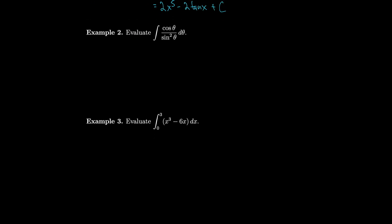Let's evaluate the indefinite integral of cosine theta over sine squared theta, d-theta. To do this, we need to manipulate the function somewhat because we don't have an antiderivative of cosine theta over sine squared theta off the top of our heads. However, if we split the fraction into two products, we get 1 over sine theta and cosine over sine theta, which are both familiar functions.